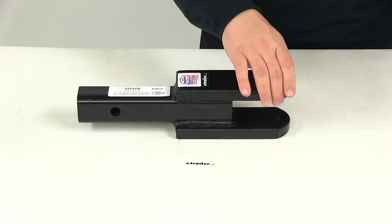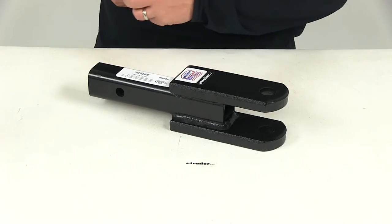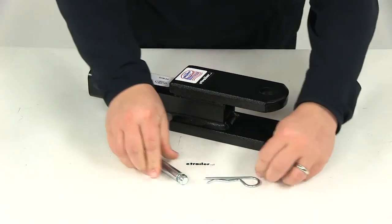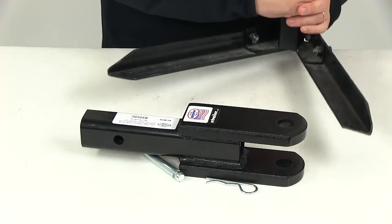The draw bar thickness on this is going to measure three-quarters of an inch. Real quick, I just want to go ahead and show you how it installs. I'll be using part number PC3. That's going to be your standard 5/8-inch pin. That's going to come with a clip.